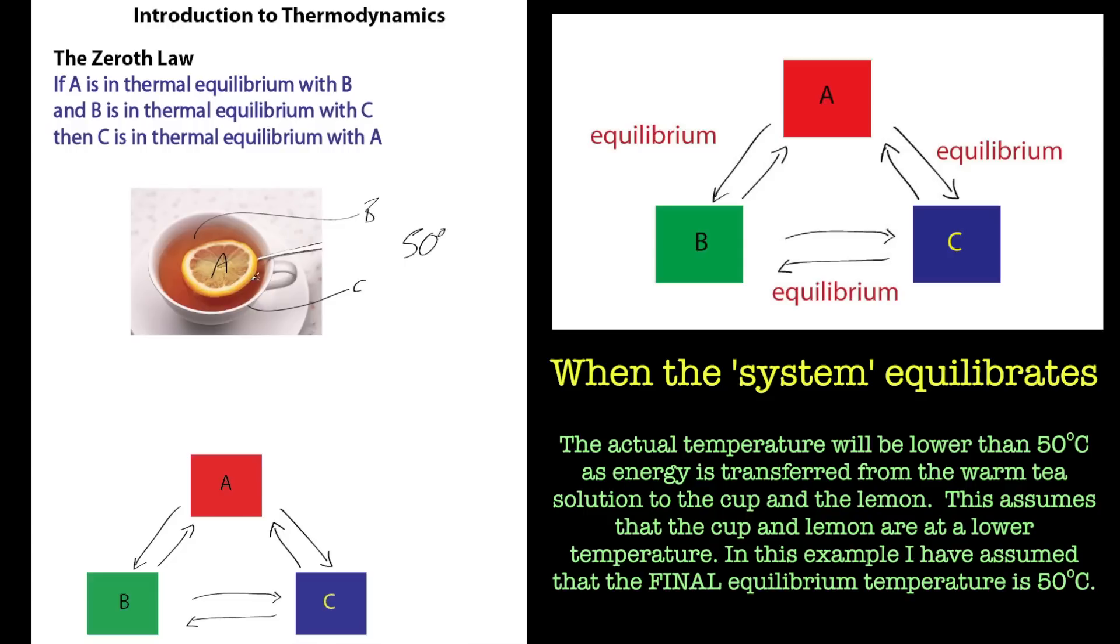So that is a system where you have A, B, and C. A is not in contact with C, but it is in thermal equilibrium with C because of B. So they're all in thermal equilibrium with each other because they share this structural network.